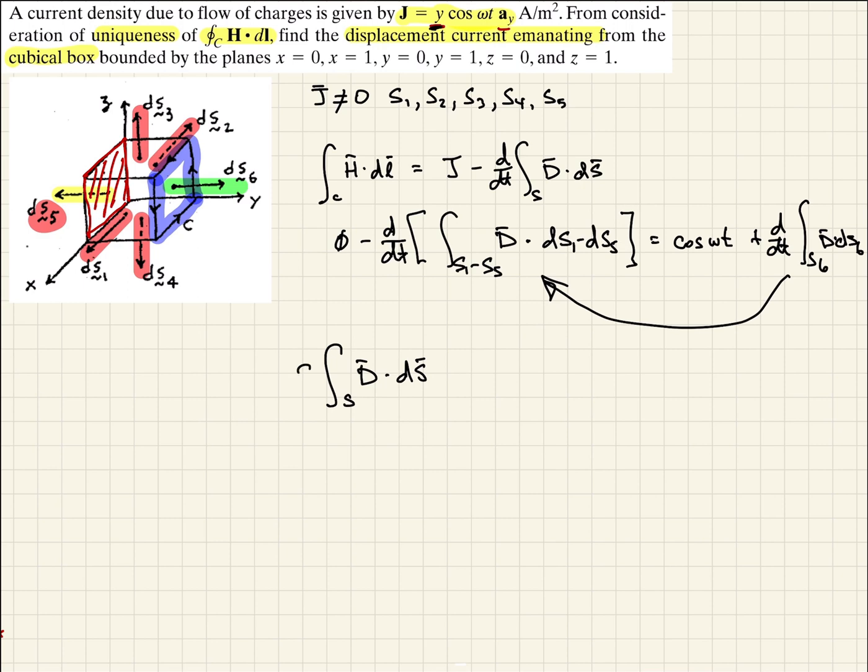And again, that's the time derivative. And so what we're left with then is this negative cosine omega T.